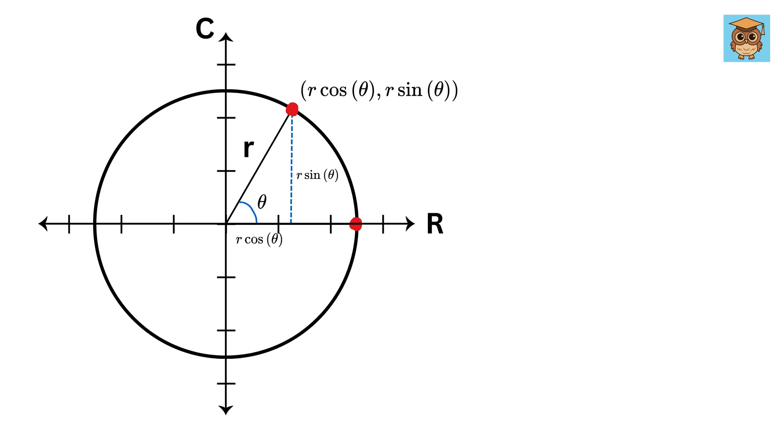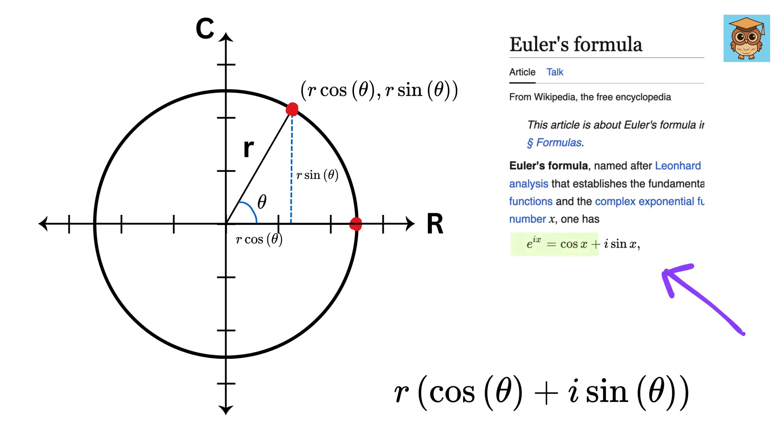And in our complex plane, or in this graph, we can represent this as r cos(θ) in the real number line plus r sin(θ) times i in this imaginary number line. Take r as common, and we get r times (cos(θ) + i sin(θ)). Now, we can use this Euler's formula without getting into much technical details. This thing will become r times e^(iθ).